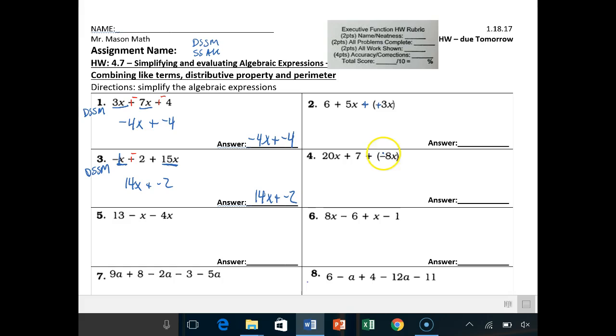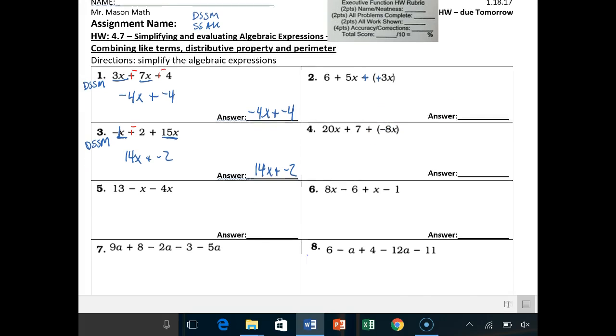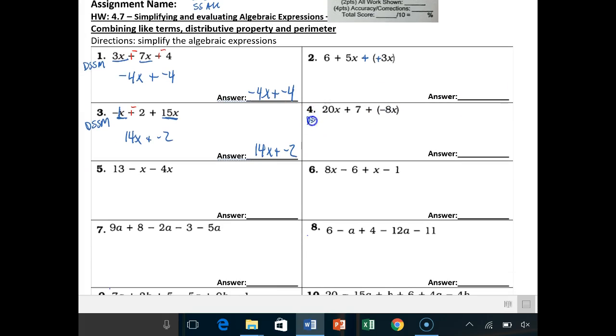There's no need to change this to a plus negative, right? Because this is already saying I'm a negative 8. And this right here is basically saying plus the negative. So do not change that. You're doing 20x plus negative 8x. And obviously that's a DSSM again.